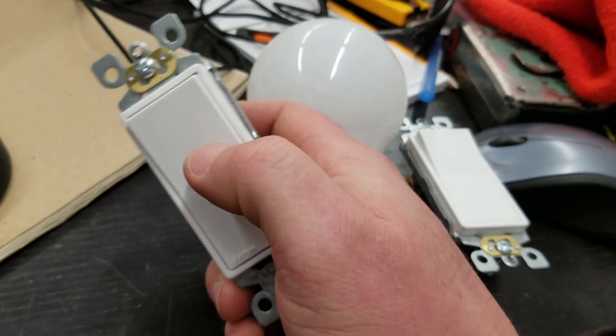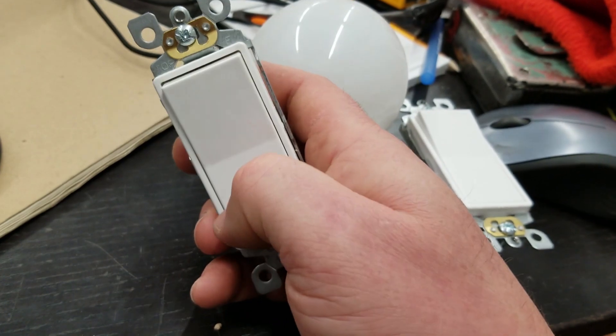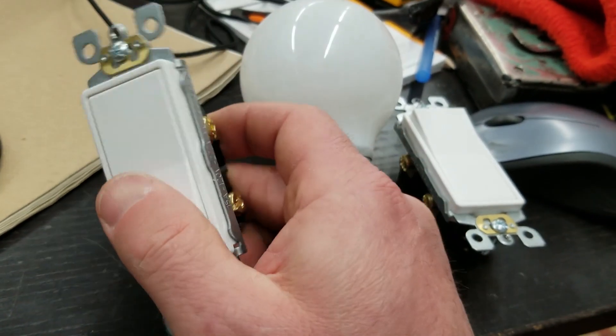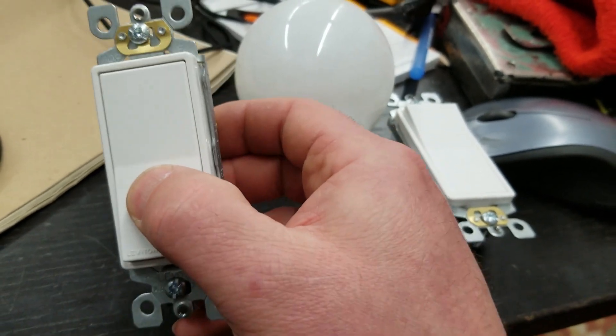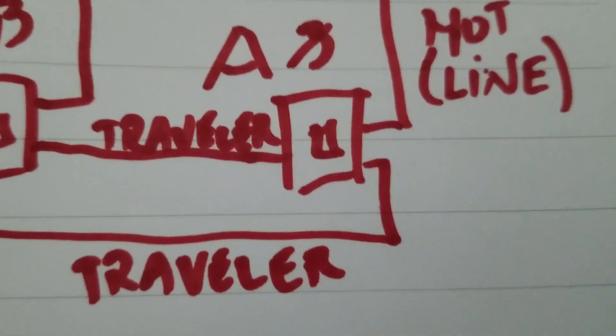Switch A is an entirely arbitrary label - it could be alpha for all we care. What we're worried about is the box, what's got the hot in it. Identified the hot line in switch A. That means the other two are travelers.